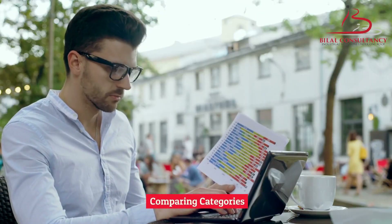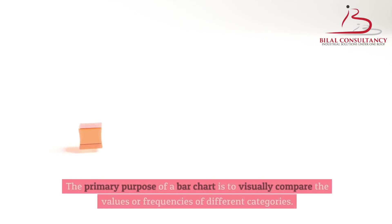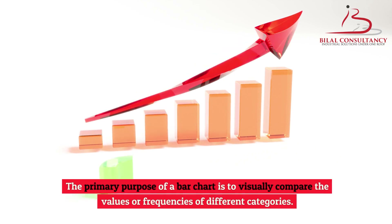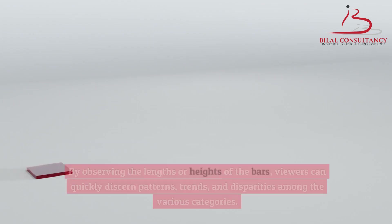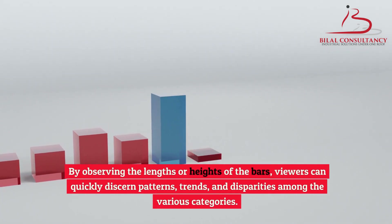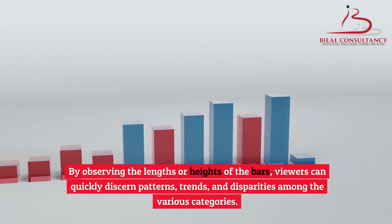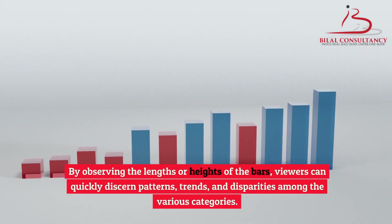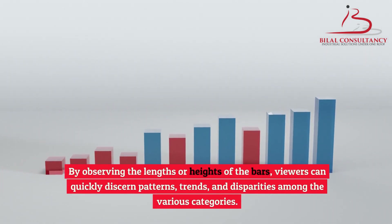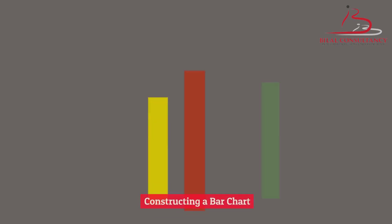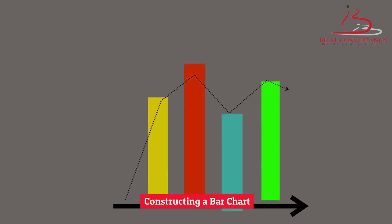The primary purpose of a bar chart is to visually compare the values or frequencies of different categories. By observing the lengths or heights of the bars, viewers can quickly discern patterns, trends, and disparities among the various categories.